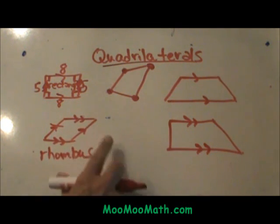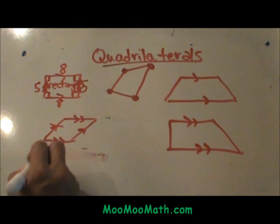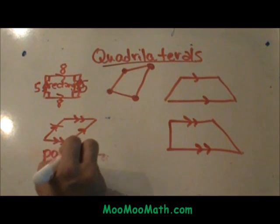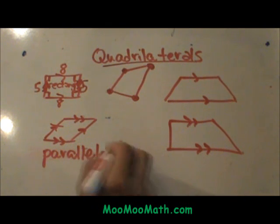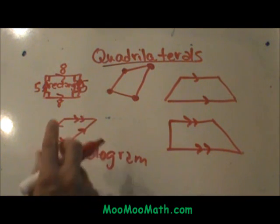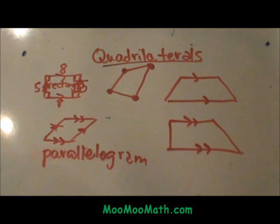Actually this is not a rhombus, this is just a plain old parallelogram. The opposite sides are parallel, but we don't know if those sides are congruent. It can't be a rhombus because we don't know if the sides are congruent, so it's just what we call a parallelogram.